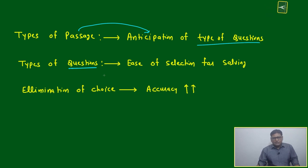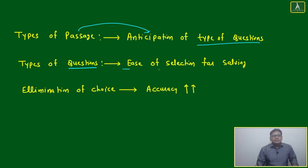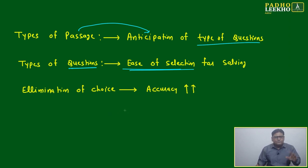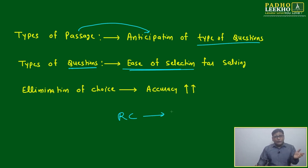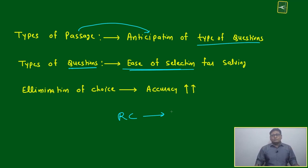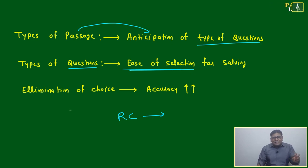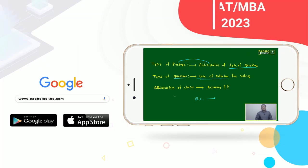If you know how many types of questions there are, and based on just the starting line of the question you are able to pick the right one, then selection becomes easy. Fifty to sixty percent of questions in CAT RC are easy — it is a matter of selection. If you have written CAT once or twice you know the experience: the problem is in selection of questions and elimination of choices. Questions are there — easy, moderate, and tough — but if we focus enough on the easy ones, it is sufficient to get a good score.